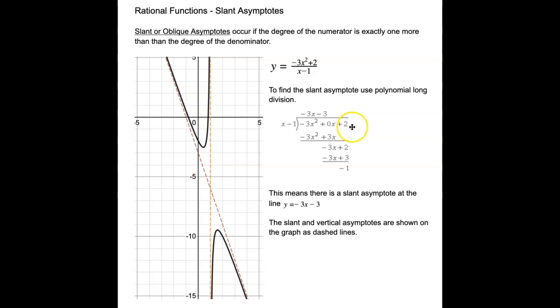So here's my numerator, and here's my denominator. And I'm going to ask myself, how many times does x go into -3x²? Well, it's going to go in -3x times. Then I multiply. -3x times x is -3x². -3x times -1 is 3x. And then just like in regular division, I subtract this line from this line. It's going to leave me -3x + 2.